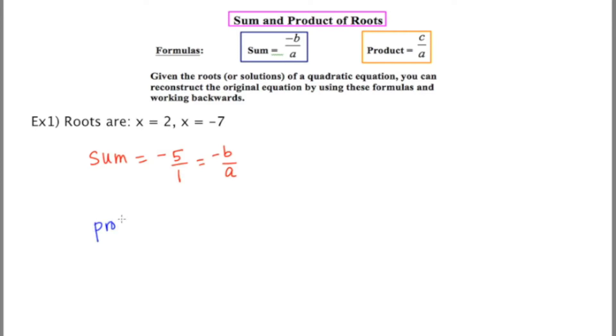Moving on to the product. The product of these two roots is found by multiplying the answers together. Multiplying 2 and negative 7 we get negative 14, which I'm going to express as a fraction, negative 14 over 1. I'm going to set that equal to c over a. The next thing I'm going to do is identify very clearly what a, b, and c are.